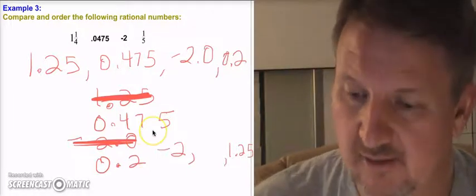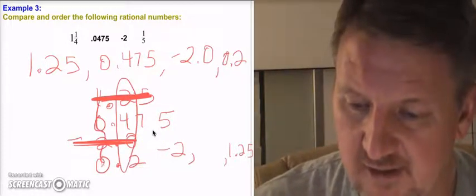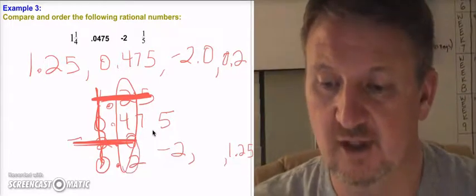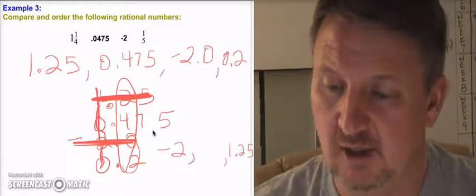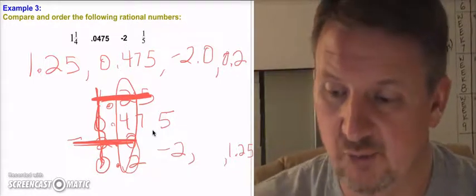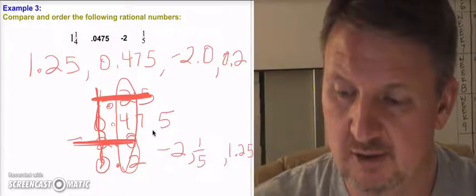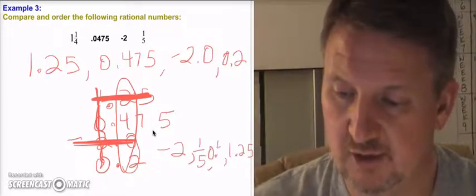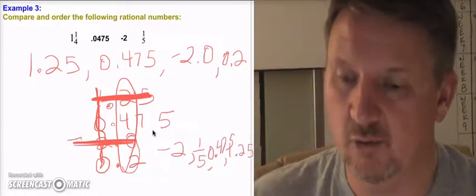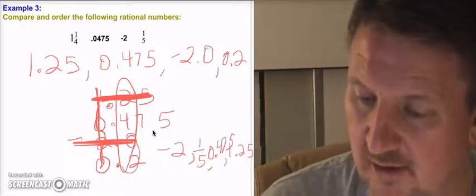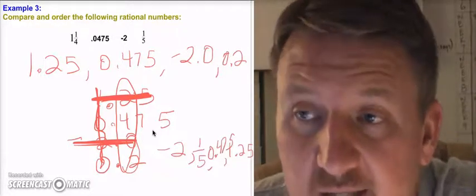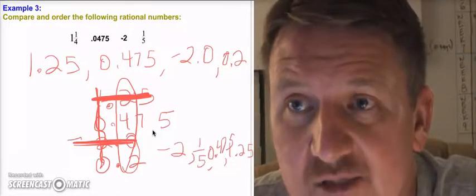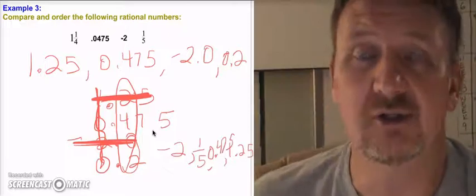Now I have 0.475 and 0.2 left to compare. Looking at the tenths column, 2 is smaller than 4, so 0.2 — which was one-fifth — comes next, and then 0.475 follows. So the final order from least to greatest is: negative two, one-fifth, 0.475, and then 1.25, which is one and one-quarter. Make sure you answer the questions.